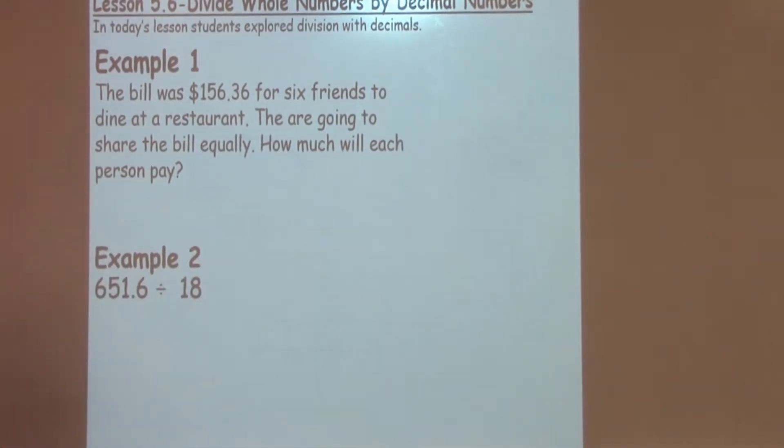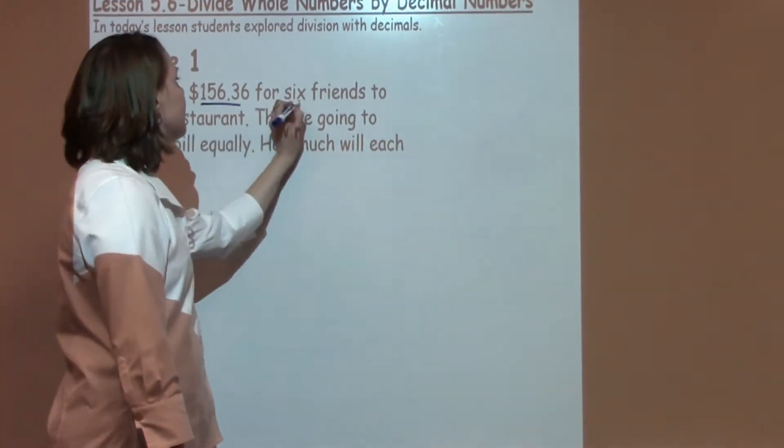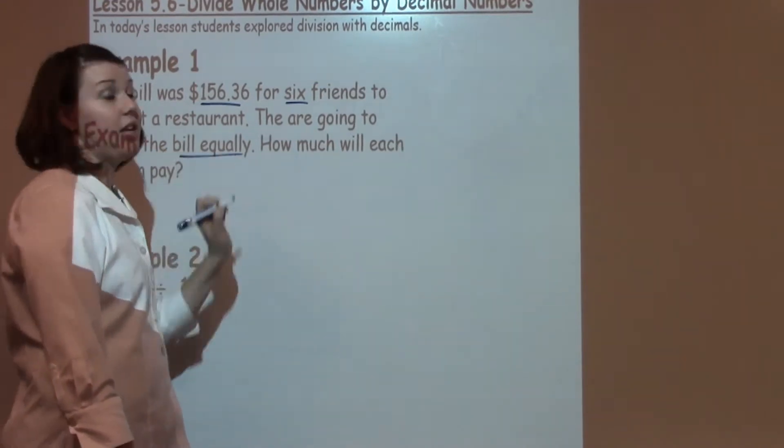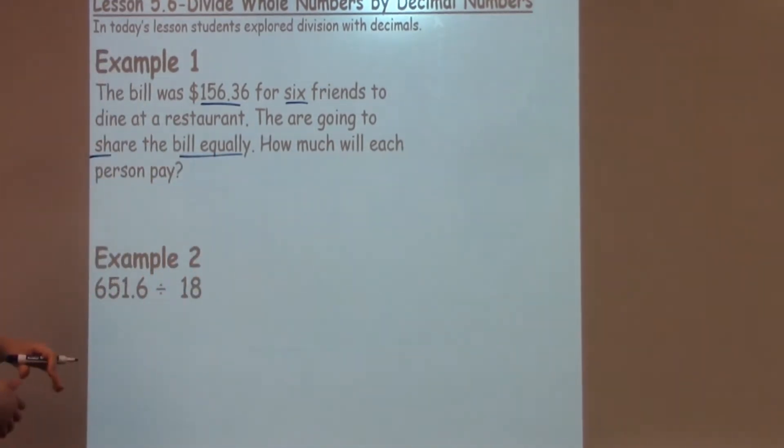Example number one says a bill was $156.36 for six friends to dine at a restaurant. They are going to share the bill equally, which is a big keyword. I know equally usually means that I'm going to be sharing it, I'm going to need to divide. How much will each person pay?